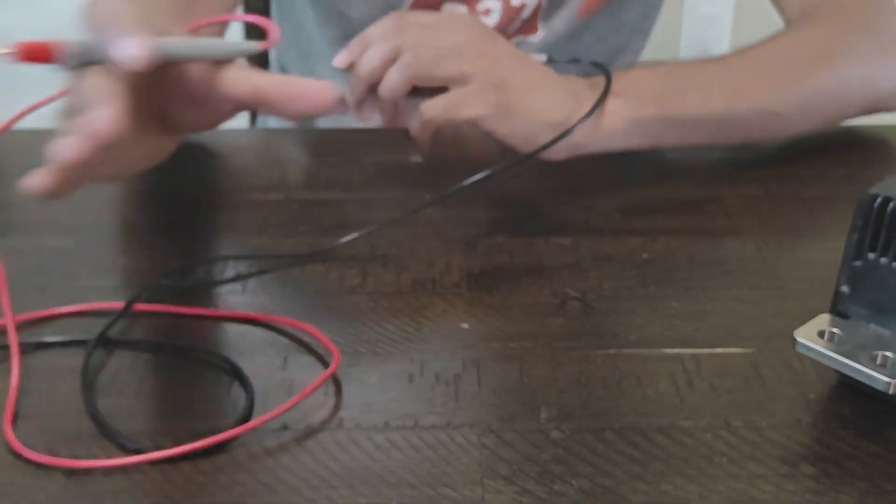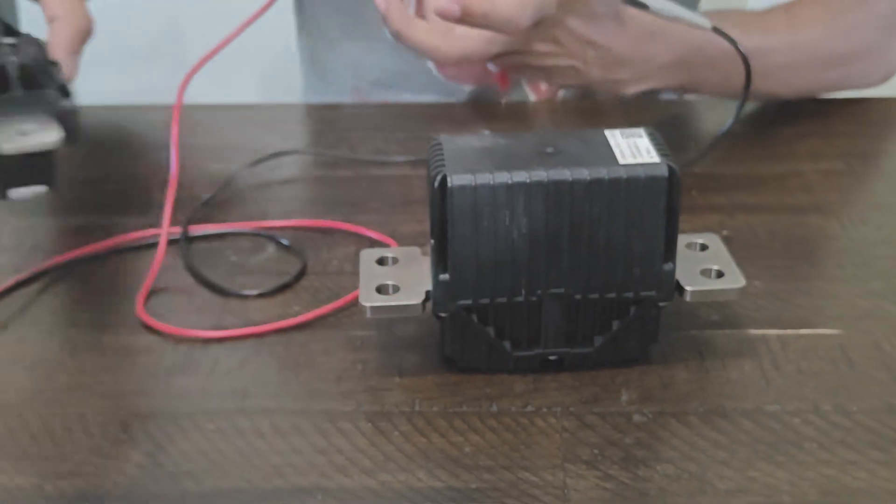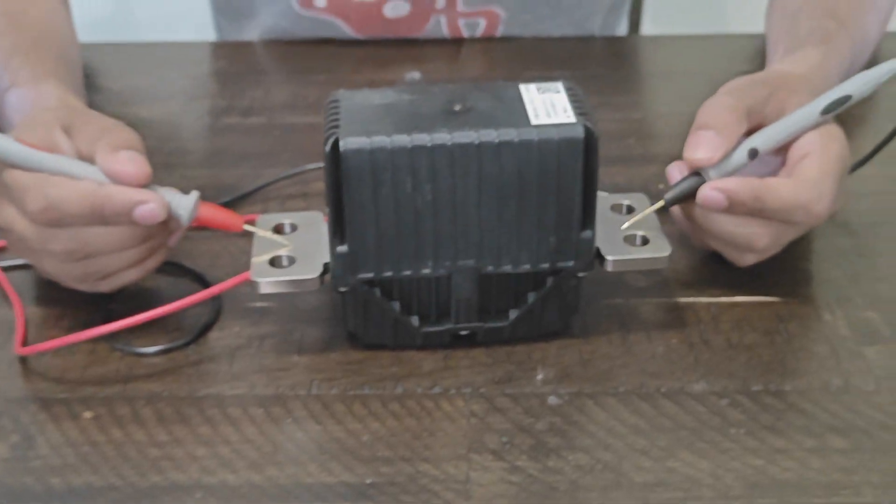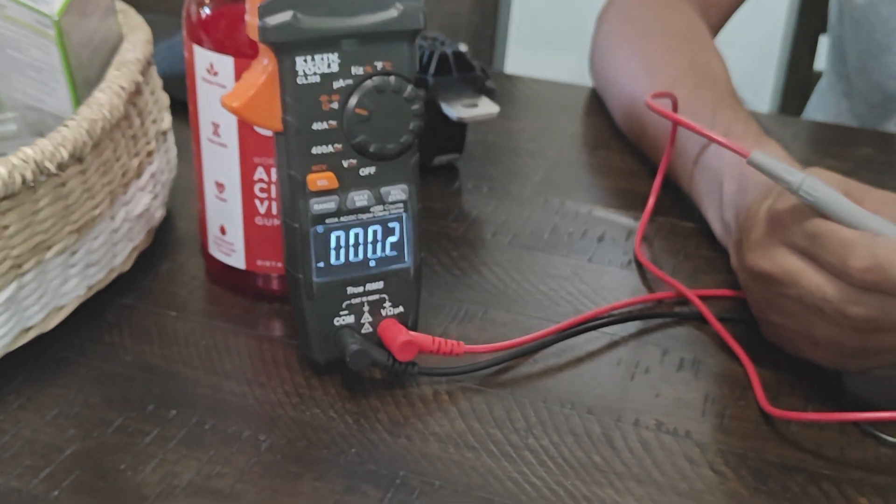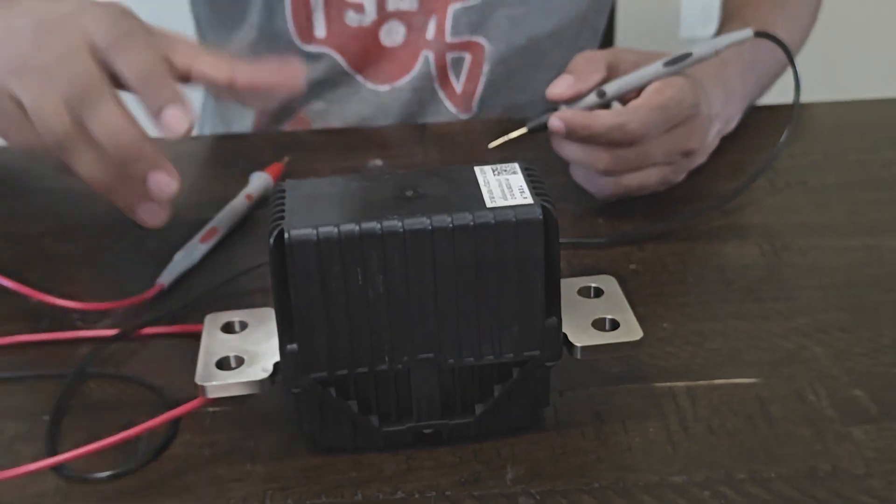I'm also going to show you the same thing on the Model S and X. Same thing - you'll hear a beep and as you can see it's under 0.4 meaning it's good, but you always want to double check.